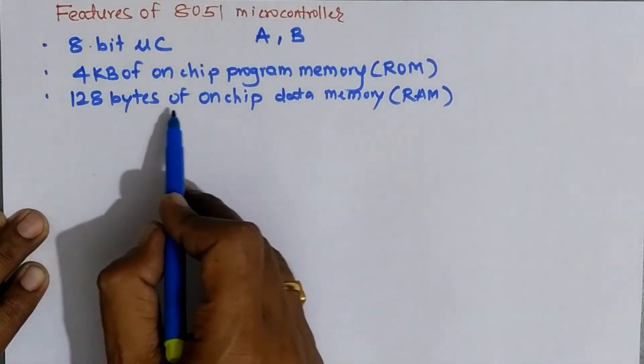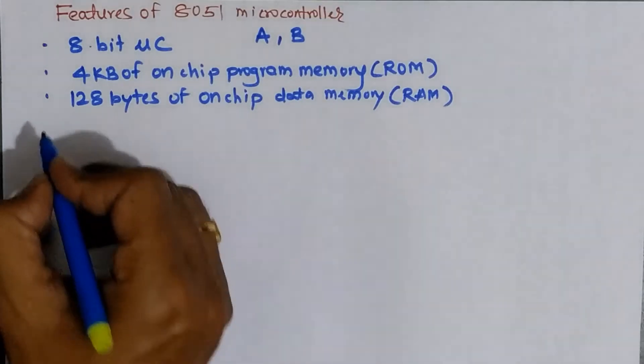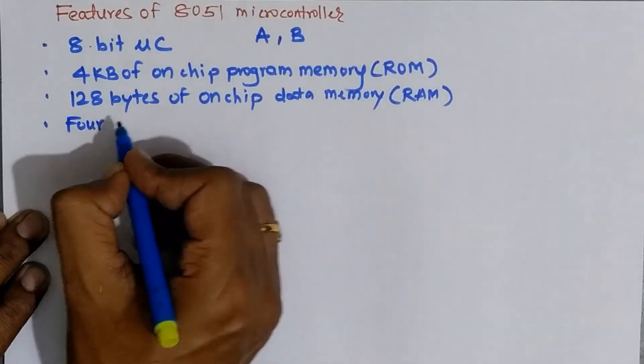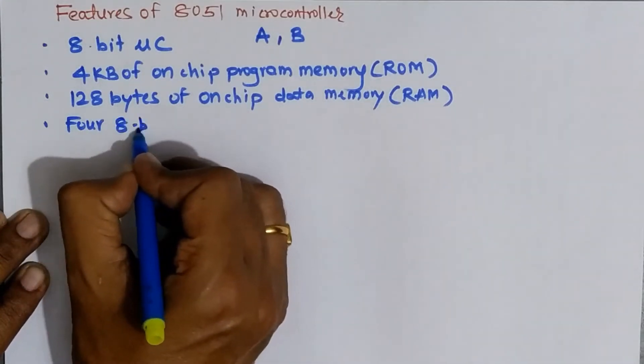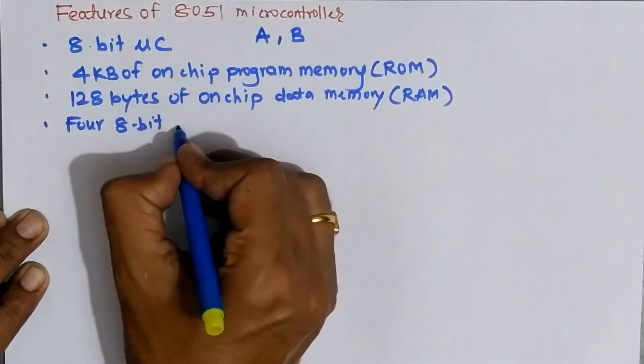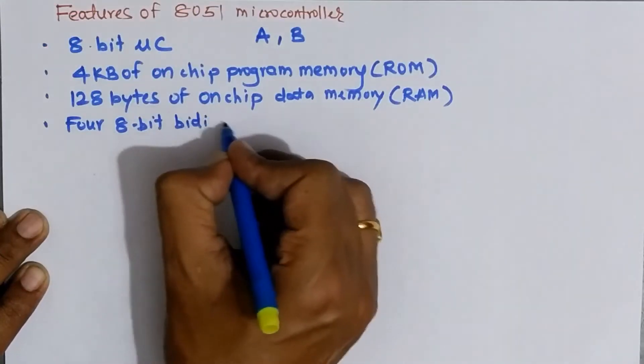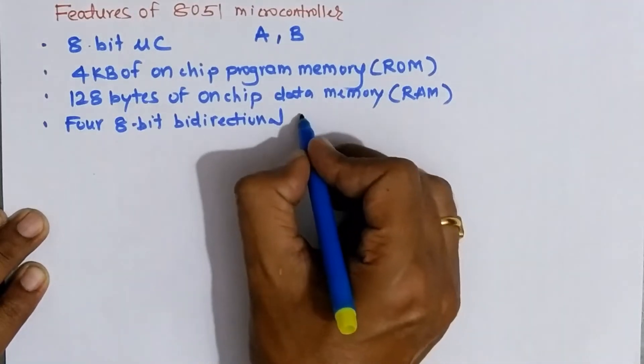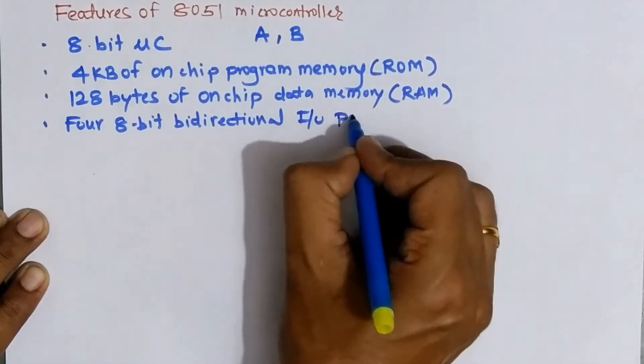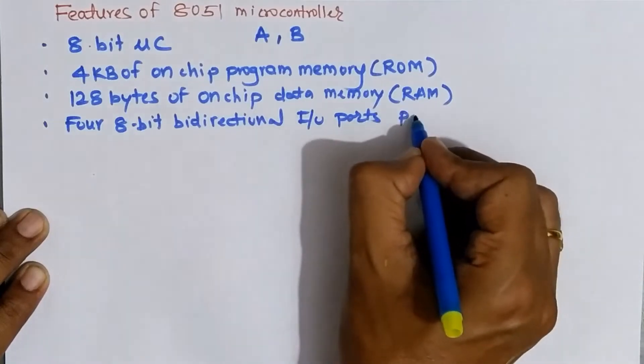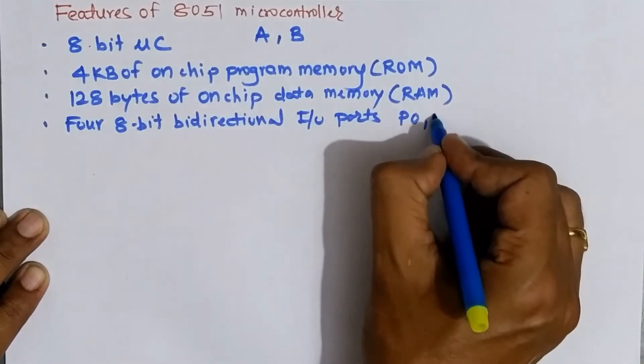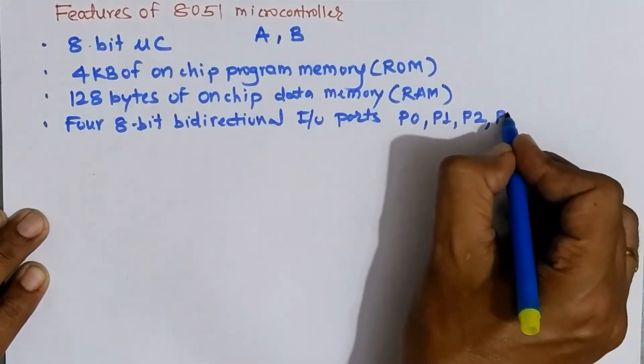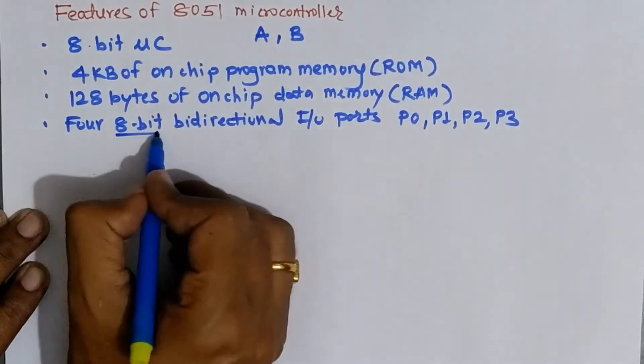The next feature is 8051 microcontroller has 4 8-bit bidirectional IO ports. So number of ports in 8051 are 4 in number. And these ports are named as port 0, port 1, port 2 and port 3. Each port is of 8-bit.